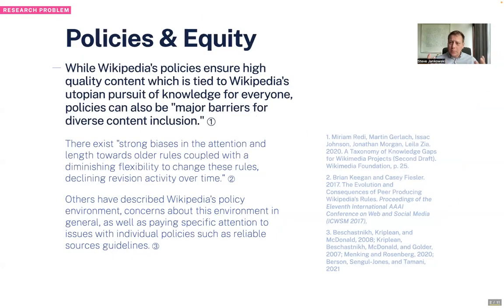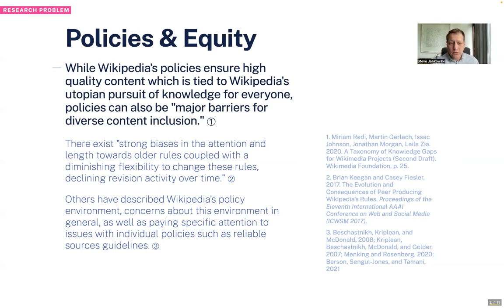The problem we're approaching in this research is that the Wikimedia Foundation has identified that Wikipedia's policies, while very useful for creating high quality content and allowing for the production of knowledge, have major barriers for diverse content inclusion because of the way they're structured. There's a lot of bias in how they approach older rules, less revision and fewer updates than in the early days when they were first being made. They calcify — because they've been around for a long time, it's very hard to change them.